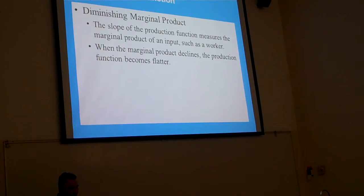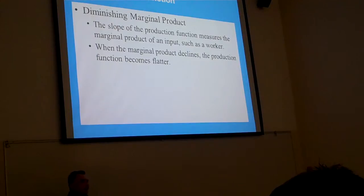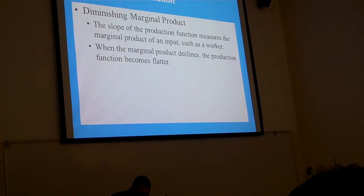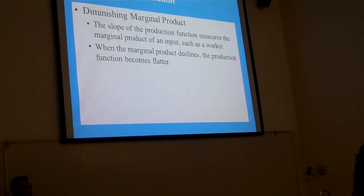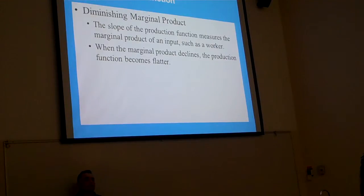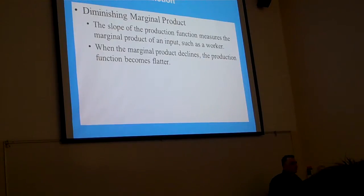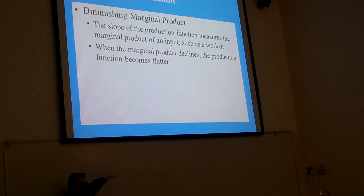Diminishing marginal product: the property whereby as you add additional input, you get additional output but at a decreasing rate. The most common variable to add or subtract is labor, because it's easier to adjust workers than to add a pizza oven or a new shop. As you add workers, your production function gets flatter.